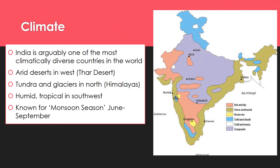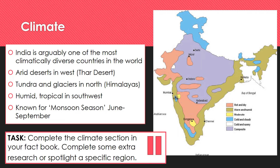I didn't want to bombard you with too much information, so instead I'd recommend picking just one climate to focus on or spotlight, and speaking a bit more about that. You might want to look at the north, the south, the east, or the west — maybe pick a particular location within India and look at it in more detail, because the climate is so varied. Have a go at that — off you go.